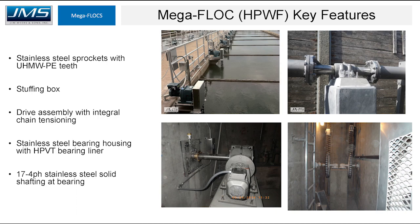There is a wet chain design, a dry chain design in a dry well, and a direct drive in a dry well straight through the wall through a stuffing box. Sprockets can be all stainless steel with UHMWPE. Submerged bearings are typically stainless steel housings with an HPVT composite bearing liner, which is a composite plastic material with Teflon impregnation, significantly increasing lifespan. The solid shafting running through the bearings is typically 17-4 PH stainless steel, a very hard grade that prevents abrasion issues.